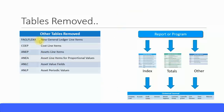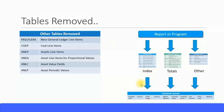Some other tables of course include FAGL FlexA, COEP, ANEP, and ANEA — the asset-related tables as well. Just to summarize: the index tables, totals tables, and some other tables have been removed from Simple Finance. They all now point to the universal journal entry table, the ACDOCA table. You need to know the table names of these other tables as well.